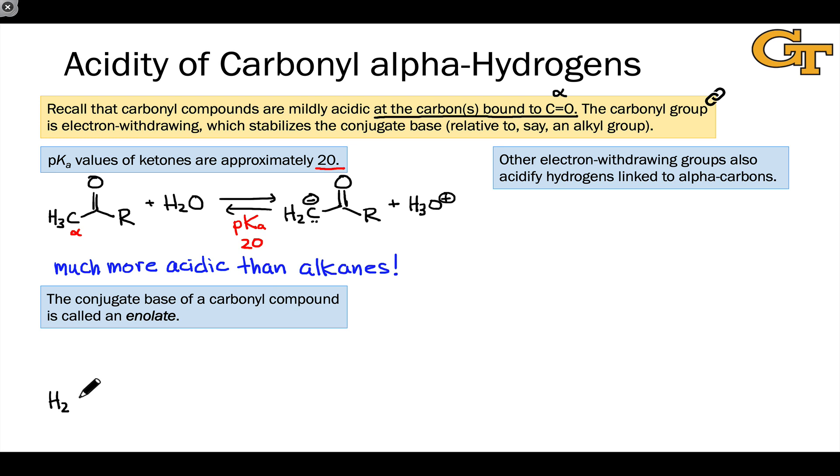So let's redraw the conjugate base of the general carbonyl compound we drew above. This structure contains a non-bonding lone pair, which is a good electron source, adjacent to a carbon-oxygen double bond, a polarized pi bond which can act as an electron sink. And so we have the capability of resonance within the structure.